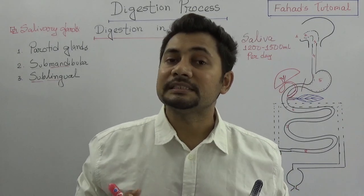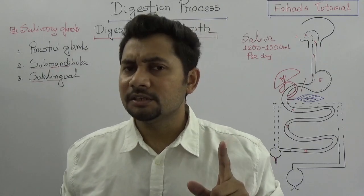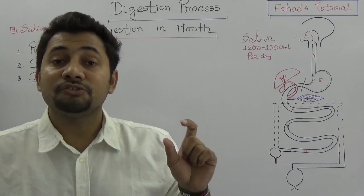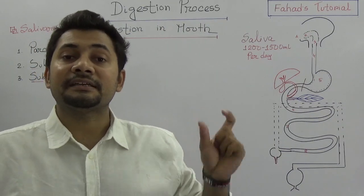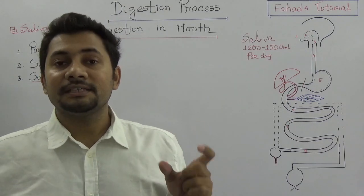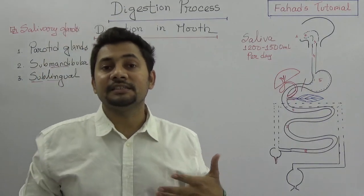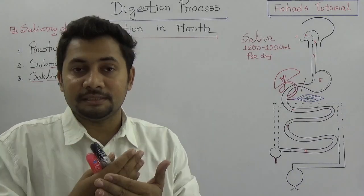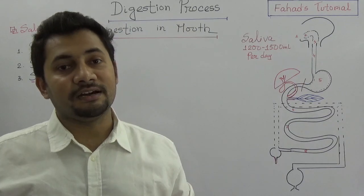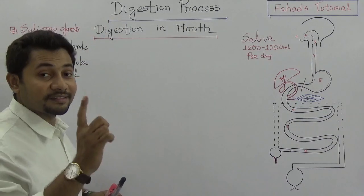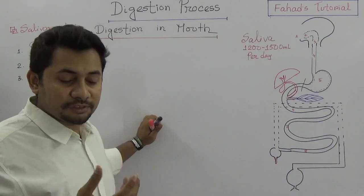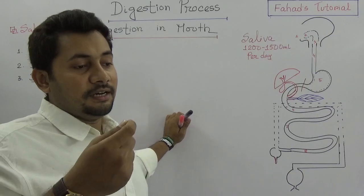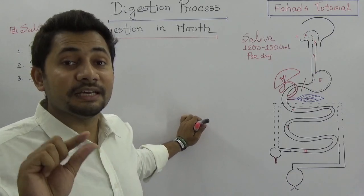We have three pairs of salivary glands: parotid, sub-mandibular, and sub-lingual. The secretions from these glands are known as saliva. A healthy adult person produces 1200 to 1500 milliliters of saliva per day. This saliva production indicates that we need food, and when we take food, the saliva is mixed up with those foods to start the digestion process. When we take foods, we need to convert three things: the food compounds — carbohydrate, protein, and fat.